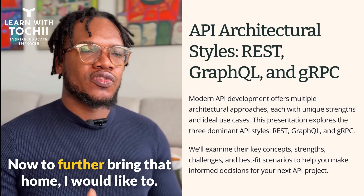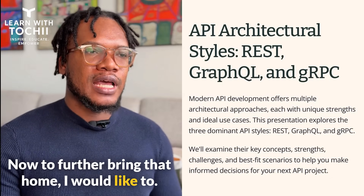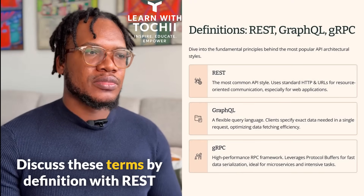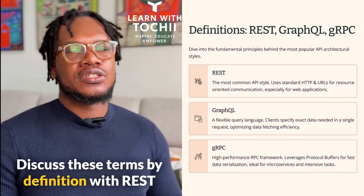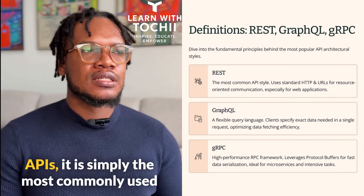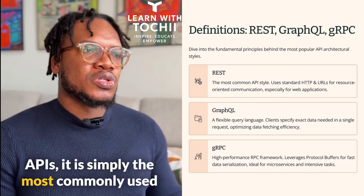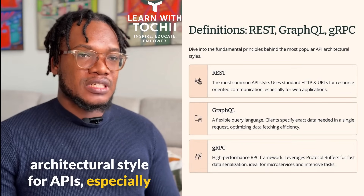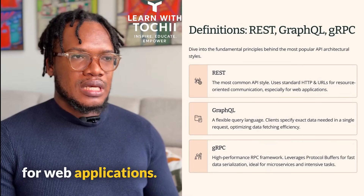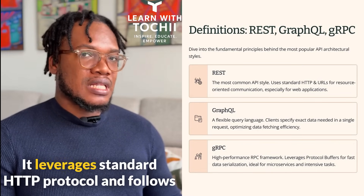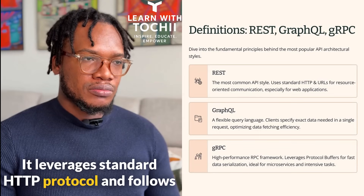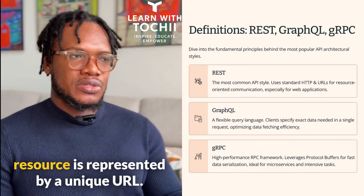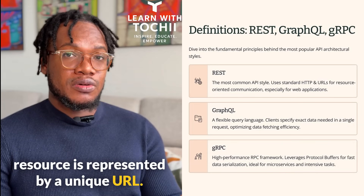To further bring that home, I would like to discuss these terms. By definition, with REST APIs, it is simply the most commonly used architectural style for APIs, especially for web applications. It leverages standard HTTP protocol and follows a resource-oriented approach where each resource is represented by a unique URL.